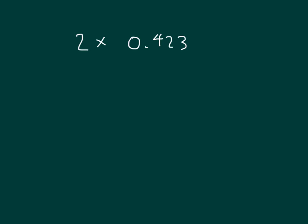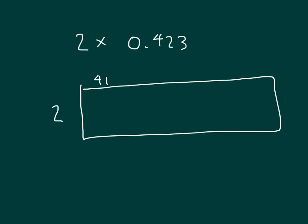Let me use an area model to solve this problem here. Break apart our decimal and do its parts: 4 tenths, plus 2 hundredths, plus 3 thousandths.